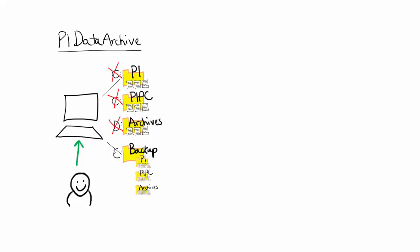However, you may also encounter a situation where there isn't just disk failure on a particular drive. You may experience hardware failure on the entire PI Data Archive machine itself. In this case, even though our backups are on a dedicated drive, we will also lose our backup files as they are on the same machine. For situations like this, we recommend including in your comprehensive backup strategy a remote backup of your PI Data Archive.